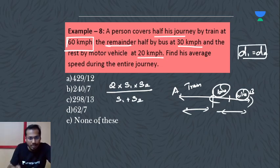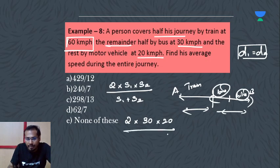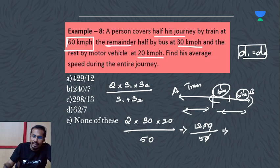2 times S1 which is 30 km per hour, times S2 which is 20 km per hour, divided by 30 plus 20 equals 50. That gives us 120 divided by 5, which cancels to 12 times 2 equals 24 km per hour.